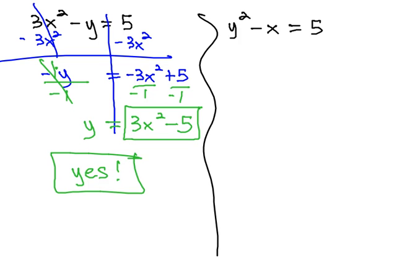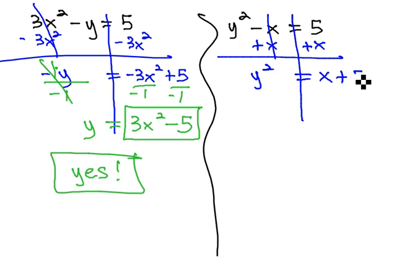Let's solve this equation for y. Again, we want to isolate the y, so we'll start by adding x to both sides, giving us y squared equals x plus 5. Notice they're not like terms. We cannot combine them to 5x. 5x means 5 times x, not 5 plus x.